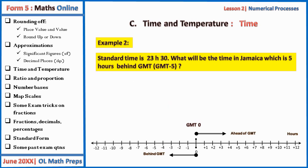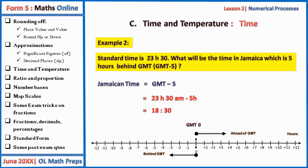Example two: standard time is 23:30. What will be the time in Jamaica, which is five hours behind GMT? Since GMT is standard time and Jamaica is five hours behind, subtract five from 23 hours, giving 18:30 — that is 18 hours 30.